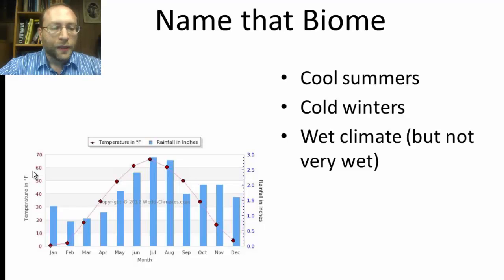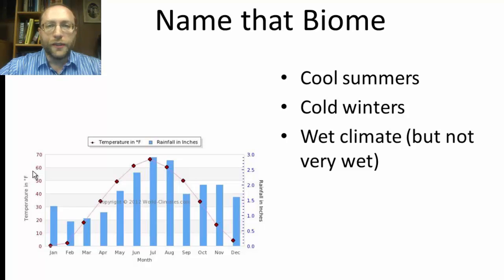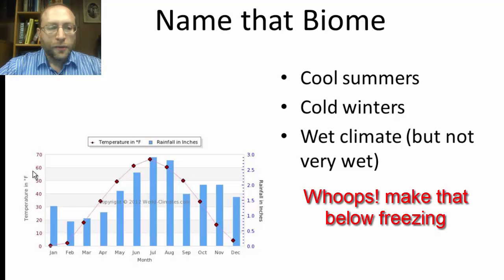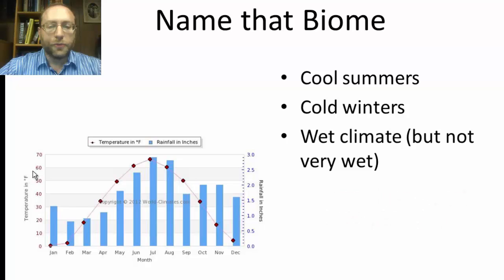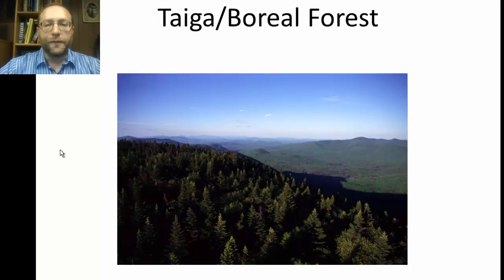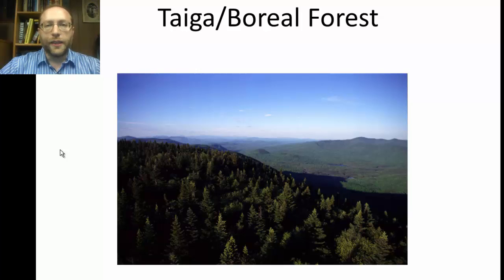Now for the next one, look at the temperature. We've got cool summers where the average temperature doesn't get up to 70 degrees Fahrenheit, and really cold winters where the average temperature is around freezing. But it's a wet climate, though not as wet as the temperate rainforest. What biome is this? Two names for this: taiga or boreal forest. These are some of the largest forests on the planet — the largest would be in Siberia, Russia. These are basically evergreen forests.